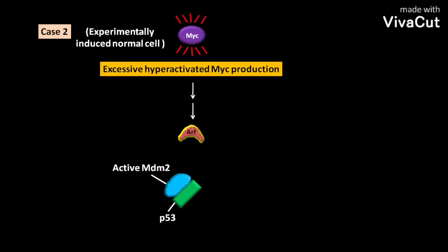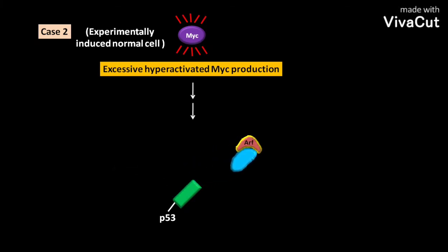This activated ARF then binds to the active MDM2 protein bound to p53 protein. This activated ARF binding then separates active MDM2 from the p53 protein. Due to this separation, two things generally occur: the first is the conversion of active MDM2 to inactive MDM2.